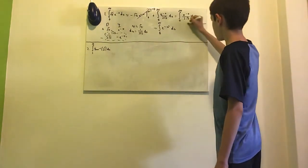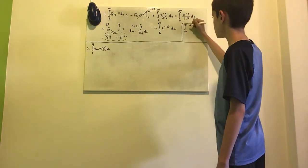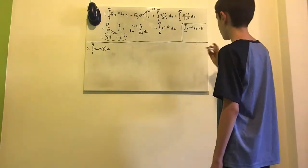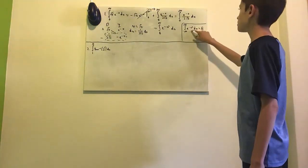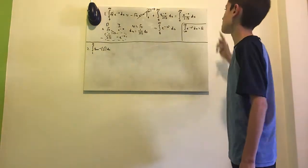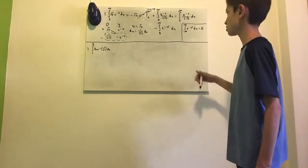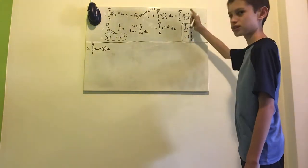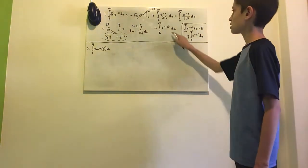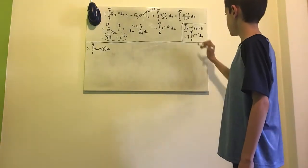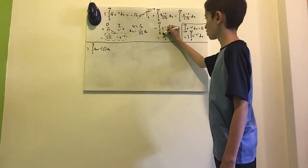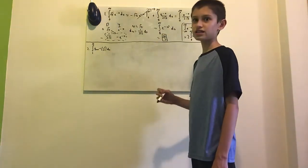This should be familiar: the integral from negative infinity to infinity of e to the minus x squared dx equals the square root of pi — this is the Gaussian integral. Since e to the minus x squared is an even function (plugging in minus x gives e to the minus x squared), we have an even function over a symmetric interval, which equals 2 times the integral from 0 to infinity of e to the minus x squared dx. That integral is exactly what we have, so our answer is the square root of pi over 2.